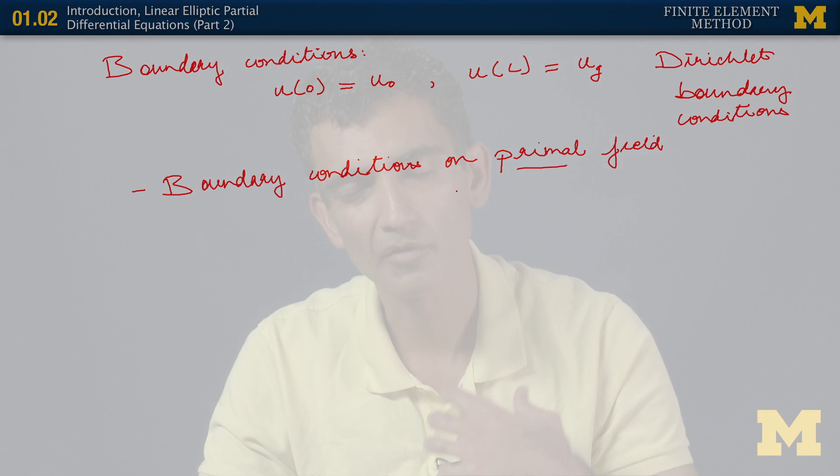And by primal, we simply mean the primary field. What is the field in terms of which we are posing the problem? Well, we are posing the problem in terms of our displacement field u. So when we apply boundary conditions on that field, we typically call them Dirichlet boundary conditions. And this terminology is quite uniform throughout mathematics, throughout the field of partial differential equations.